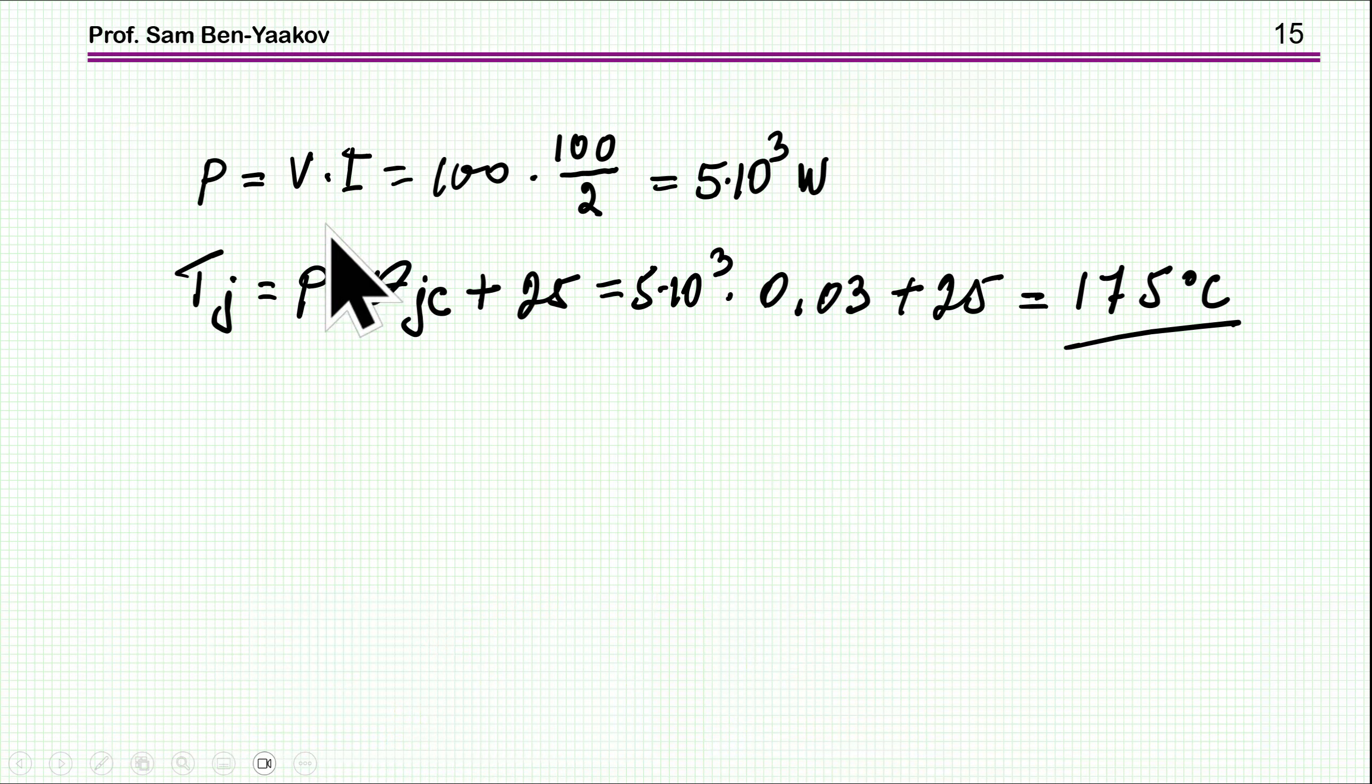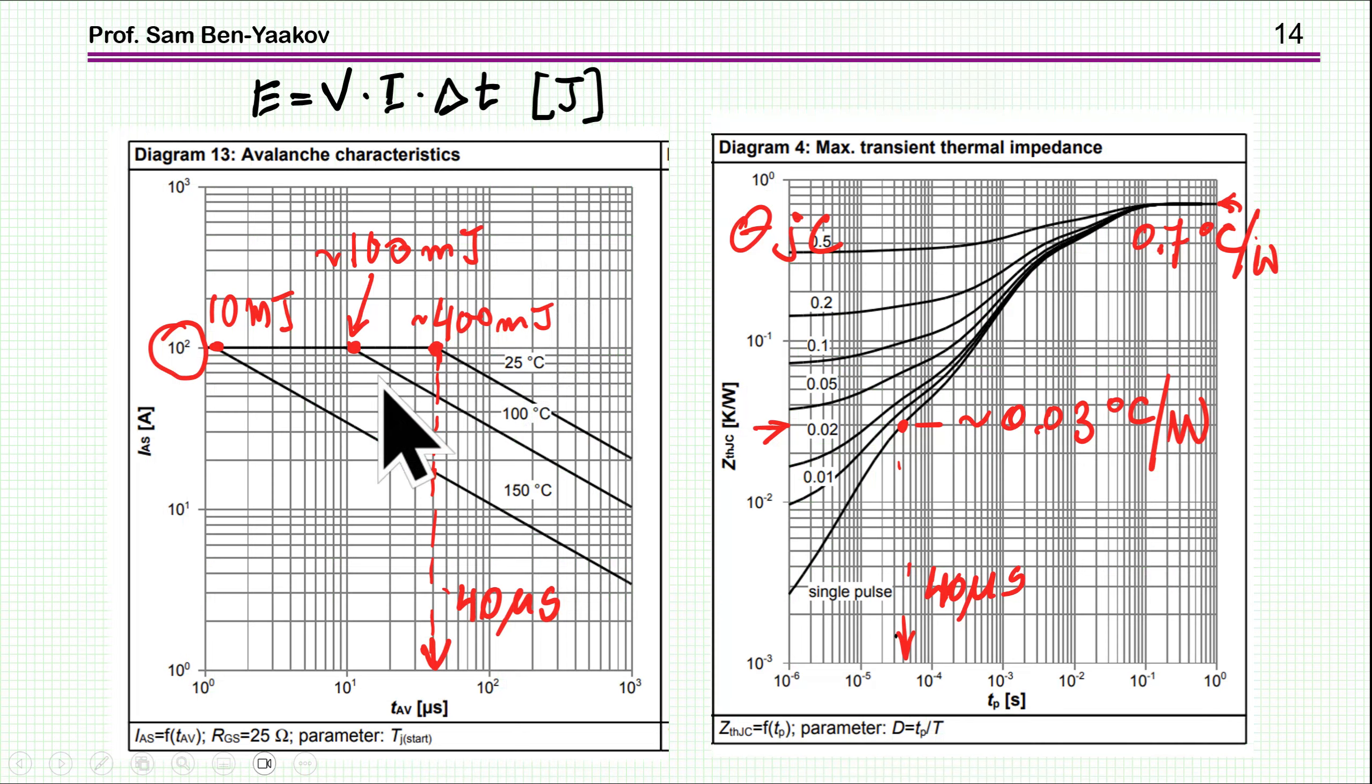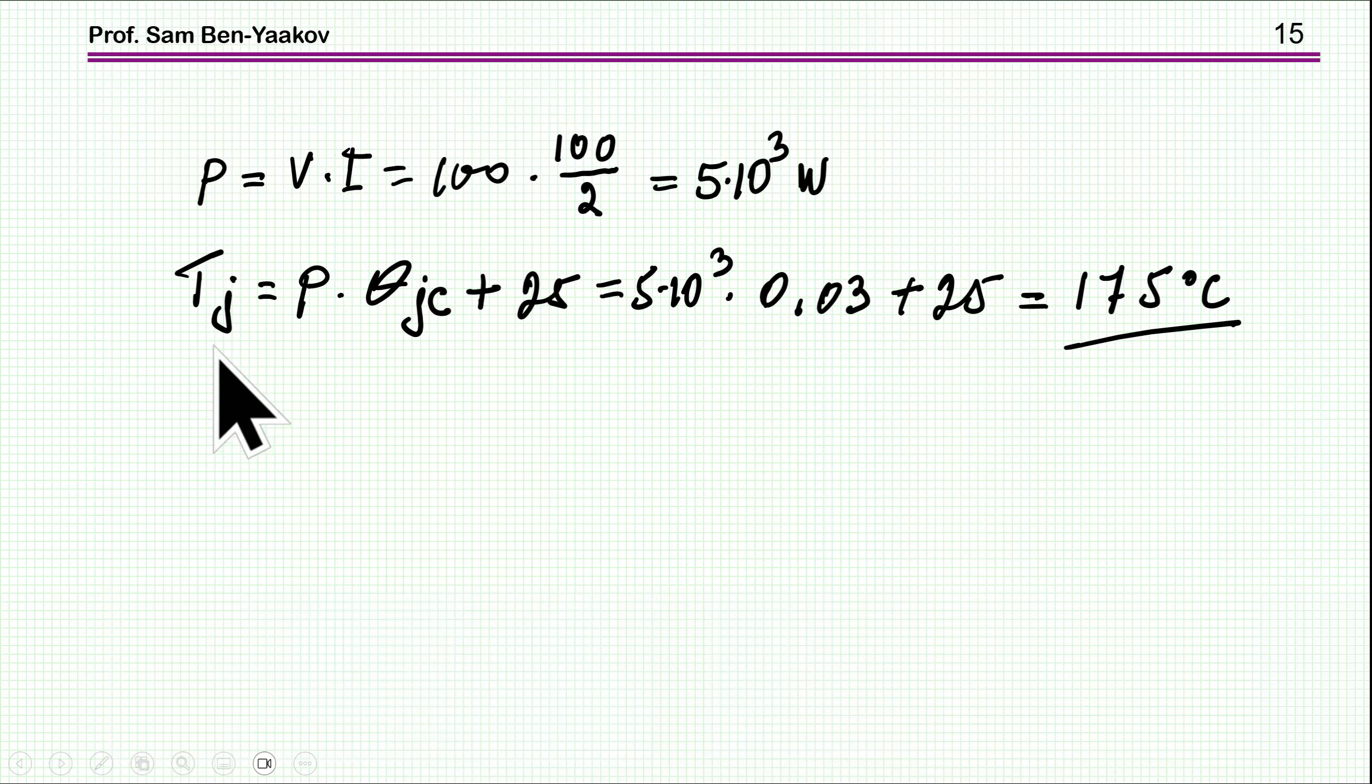If we consider this is only 0.03, and I'm looking at the power dissipated, we are talking about 100 amp peak, so the average during pulse duration is divided by 2. The voltage across the transistor is 100 volts, so the power during the pulse is 5 kilowatts. This power times the thermal impedance 0.03, plus 25, brings us to 175. We can see that in this case also the limitation is the temperature of the junction.